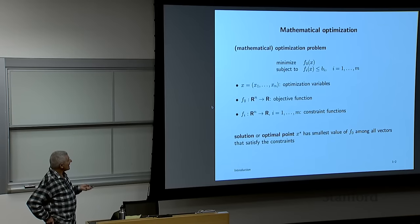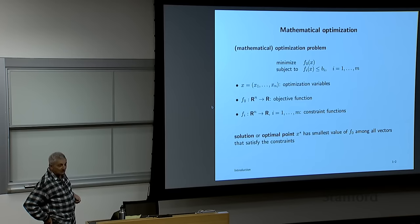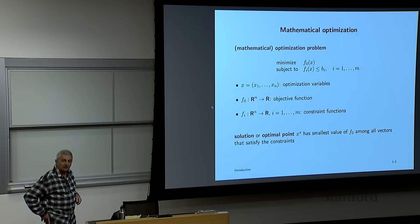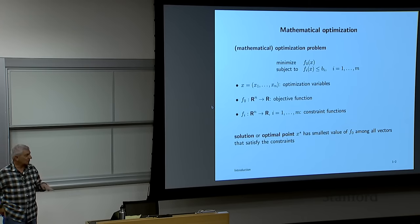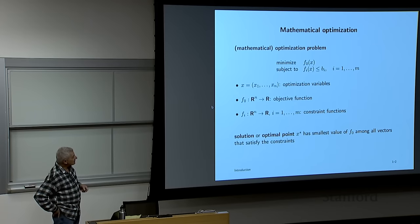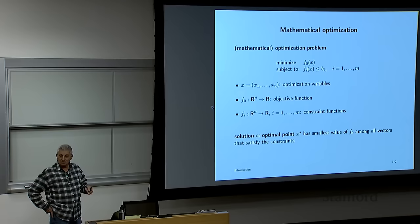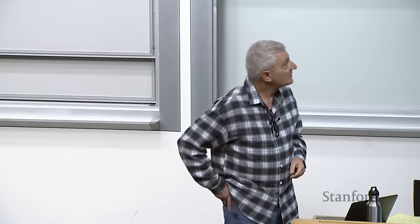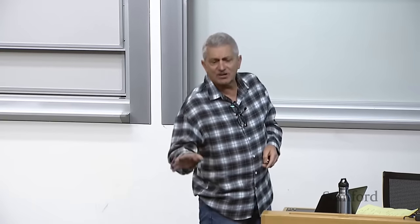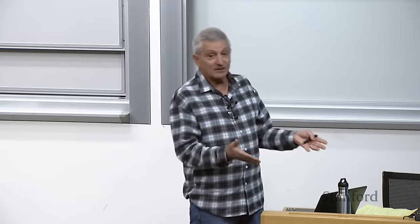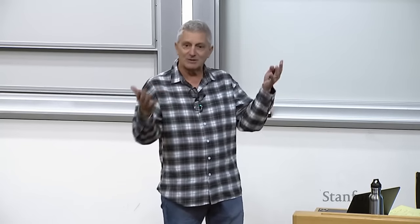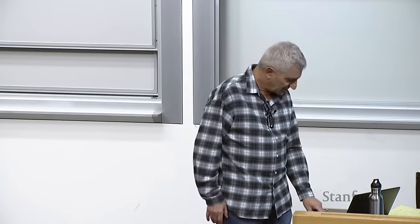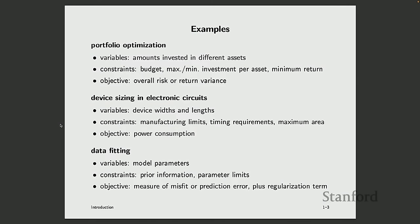Constraints can come from different places. Sometimes it's a physics constraint — like covariance matrices must be positive semi-definite. Sometimes it's a preference — like keep portfolio leverage below 6.7. An optimal point x* has the smallest objective value among all choices satisfying the constraints. Of course there are variations: you could maximize something like utility or profit instead.